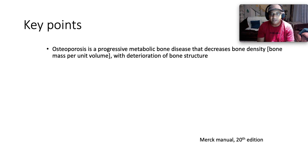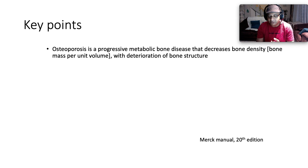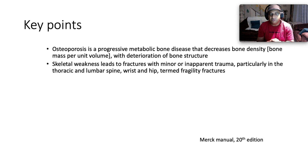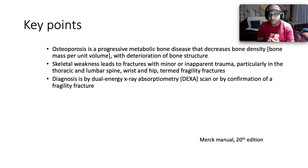Key points: osteoporosis is a progressive metabolic bone disease that decreases bone density — bone mass per unit volume — with resulting deterioration in bone structure. Skeletal weakness leads to fractures with minor or inapparent trauma, what we call fragility fractures or pathological fractures, particularly in the thoracic and lumbar spine but also in the neck of the femur.